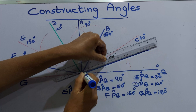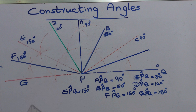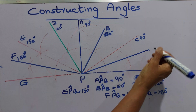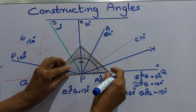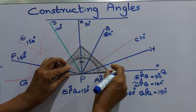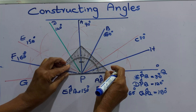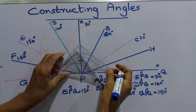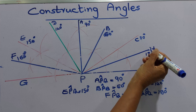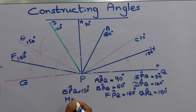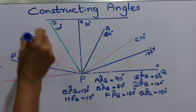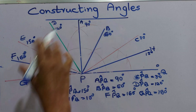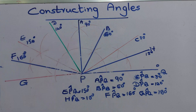Now we can measure this. We'll name this as H — what is that angle? Angle HPQ. Angle HPQ tells us 15 degrees. HPQ is 15 degrees. You can draw another angle — that is the way of drawing and constructing angles.